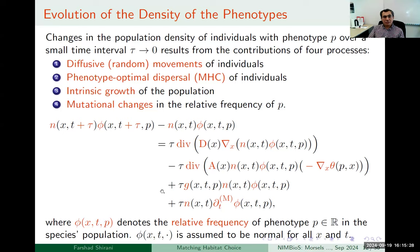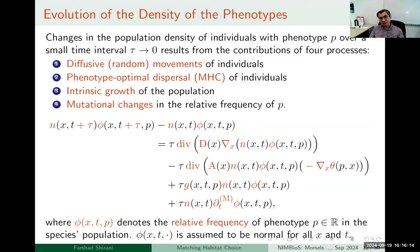The model is derived from basic equations giving the evolution of the density of phenotypes. If phi gives the density of phenotype p, then N times phi gives the total phenotype density. The change in the density of phenotype p over a short time interval tau comes from four different processes: diffusive or random movements, phenotype-optimal or matching habitat choice dispersal, an intrinsic growth rate for that phenotype, and mutational changes. These are the four components included in our model.